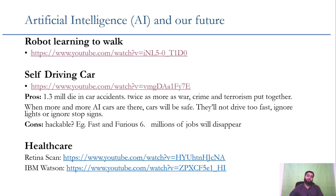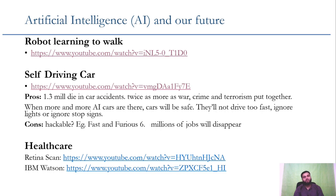People who get unemployed because of technology learn new skills, perhaps in the same field or other fields, and find new jobs. In innovation economics this is called creative destruction — destroying something while creating something new. One con of self-driving cars is that they could be hacked. In Fast and Furious 6, for example, they hacked electric cars so bad guys could take control — that's a real risk with AI-powered vehicles.